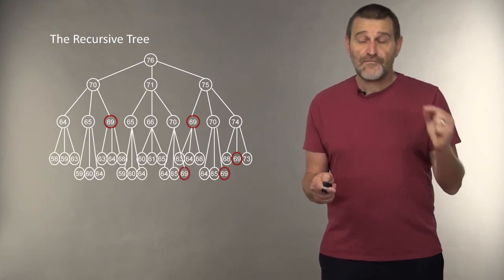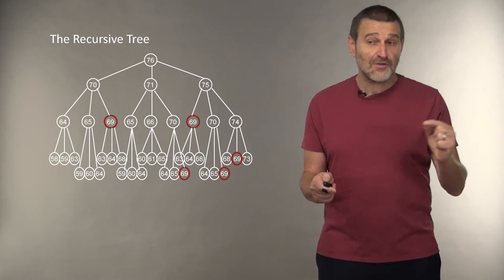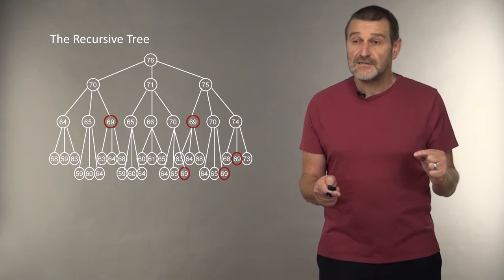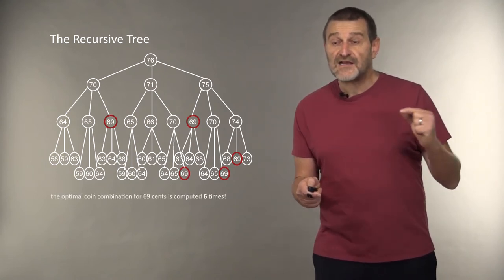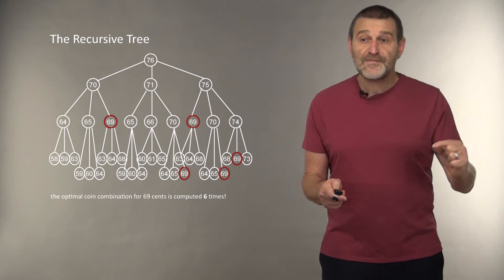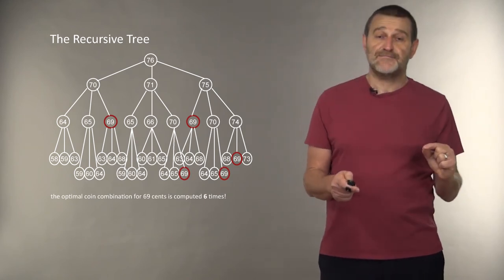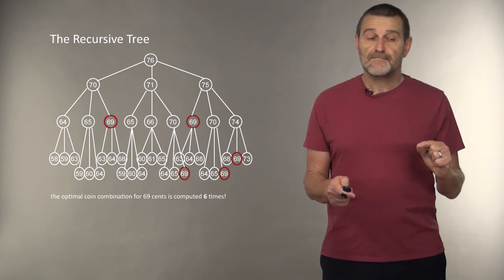But if we go further, we see that we actually need to compute it more than twice. Now we see that we need to compute it five times. In reality, we actually need to compute the optimal coin combination for $0.69 six times.